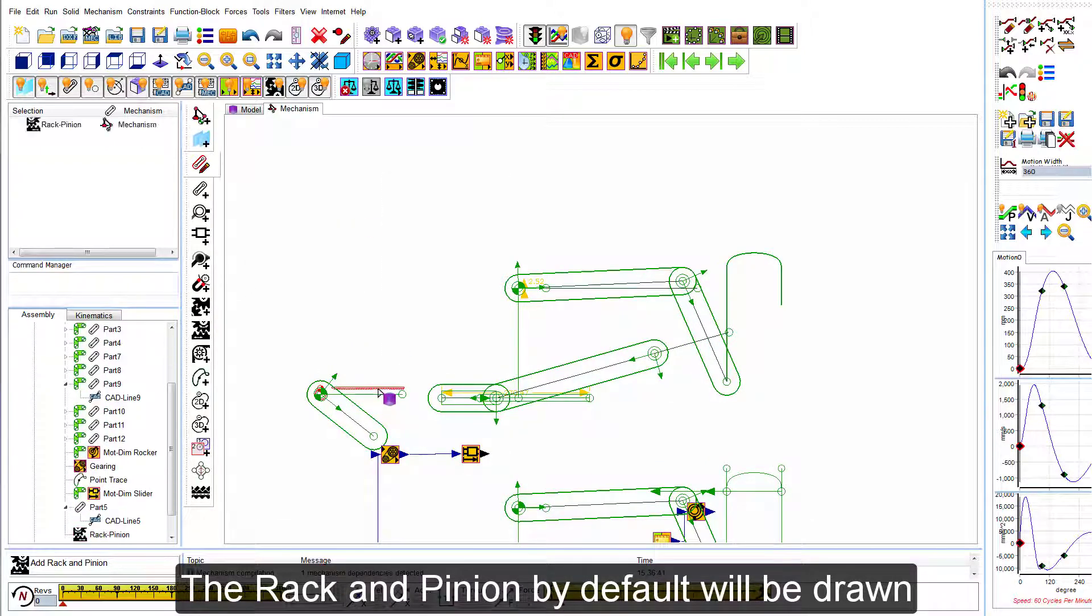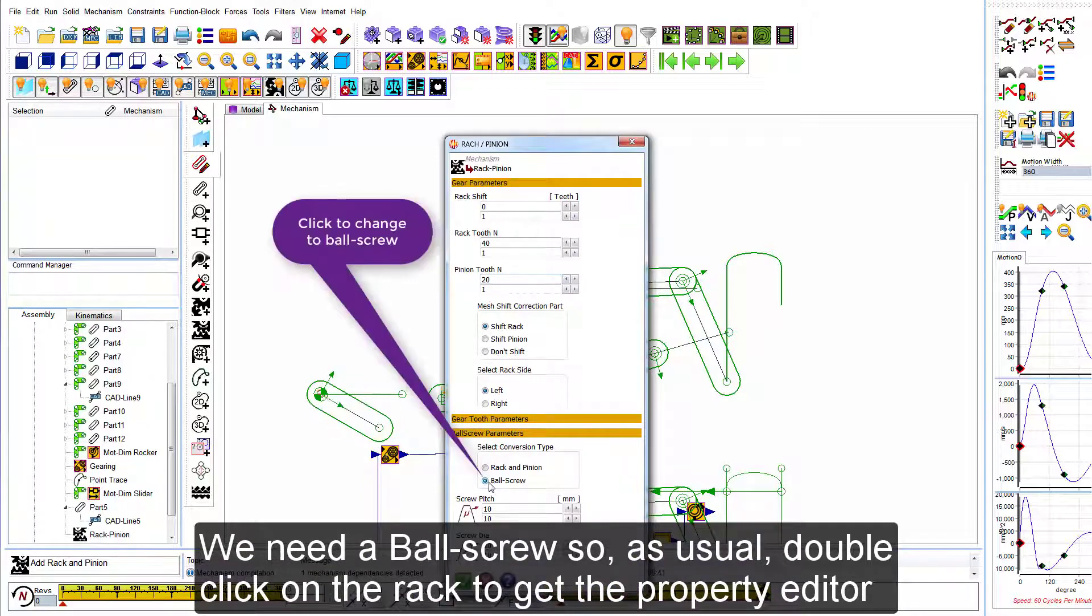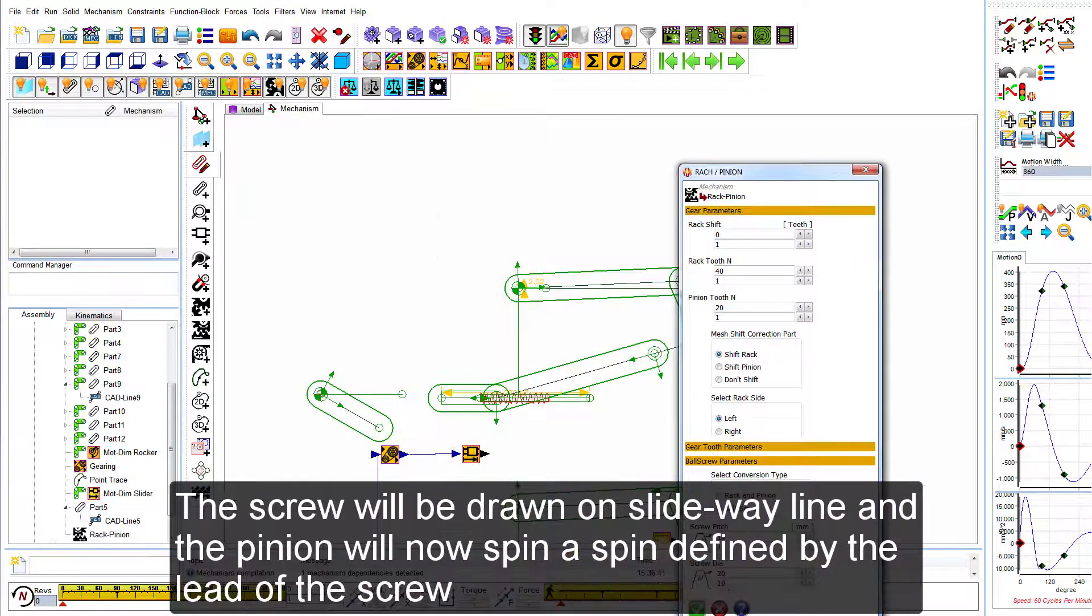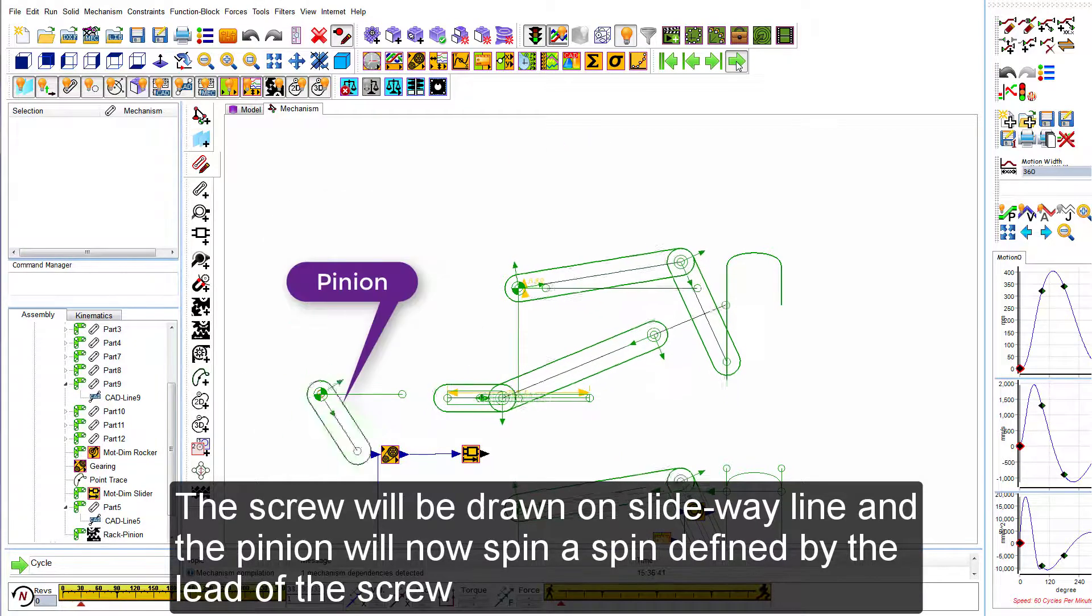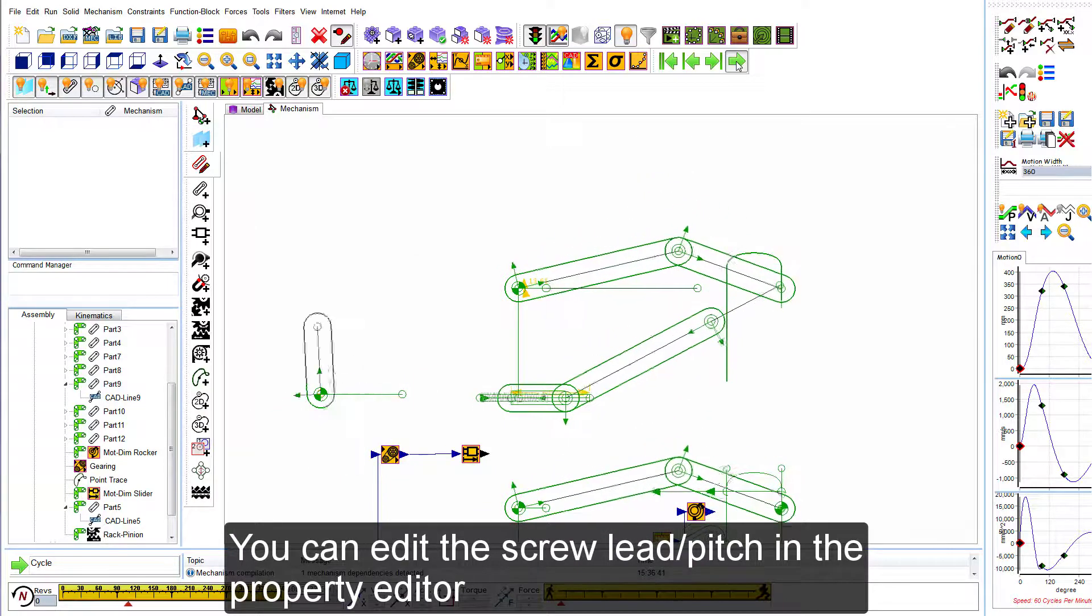The rack and pinion by default will be drawn. We need a ball screw, so as usual double click on the rack to get the property editor and change to a ball screw. The screw will be drawn on the slideway line and the pinion will now spin with a speed defined by the lead of the screw. You can edit the lead screw or pitch in the property editor.